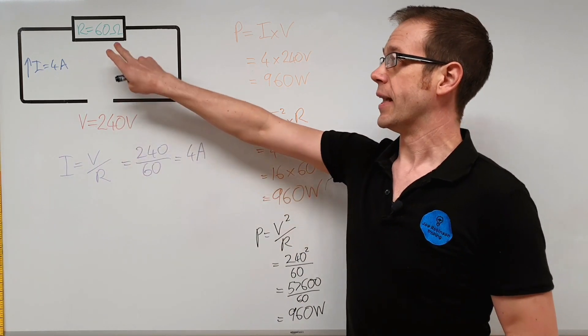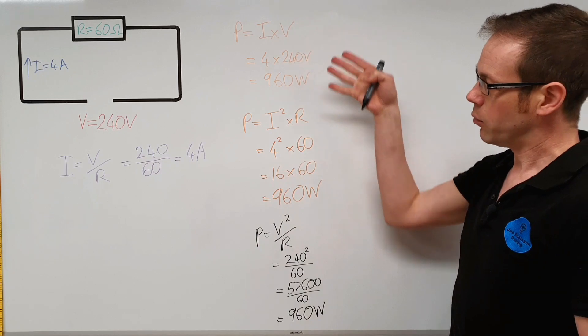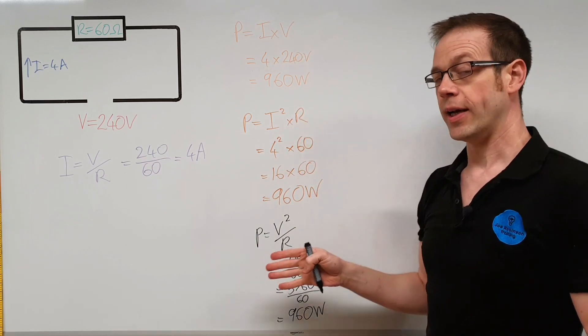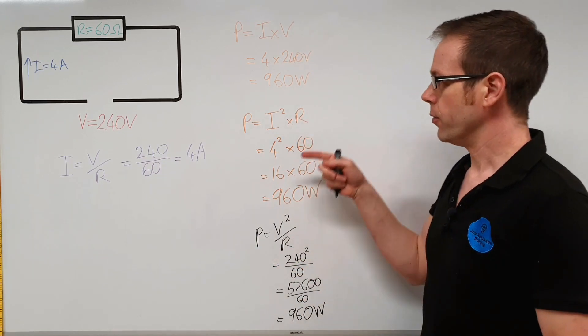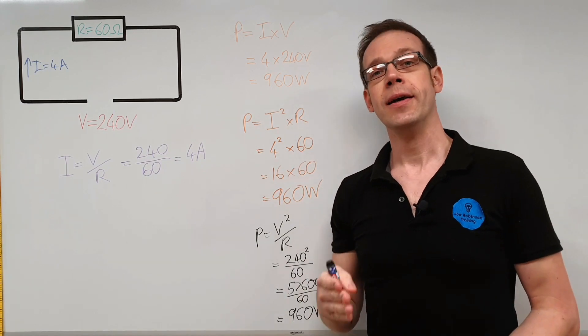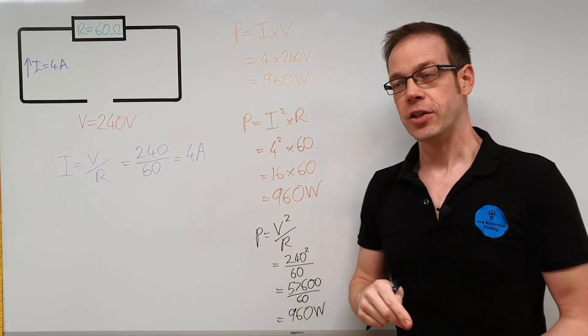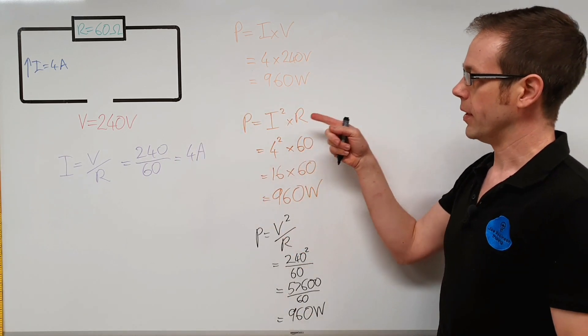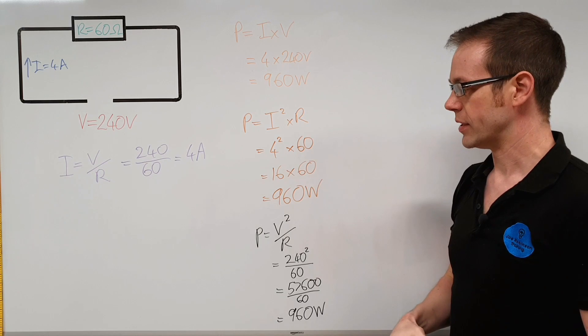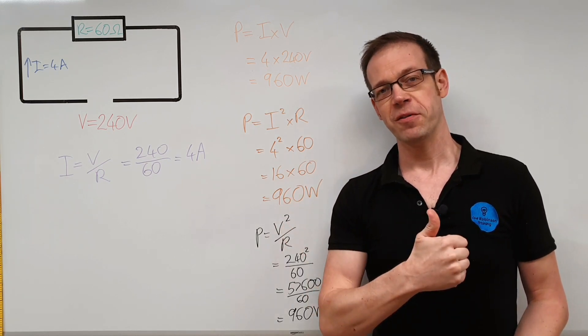So we've proven by considering just a simple circuit, we just started off with a voltage and a resistance. We've proven that using Ohm's law and any one of the three power formulae, we can actually get to our final power and it will be the same no matter which one of those electrical quantities we decide to use, as long as we get the right number in the right place for the right quantity. So all that remains in this video is to say, thank you very much for watching.